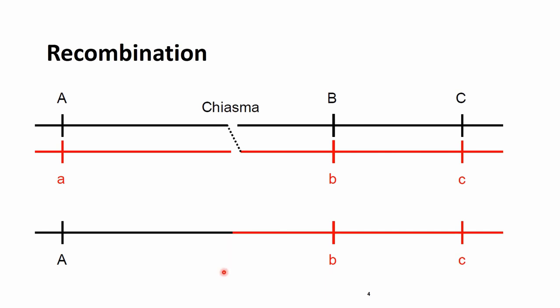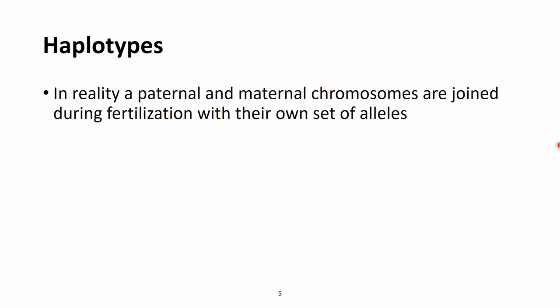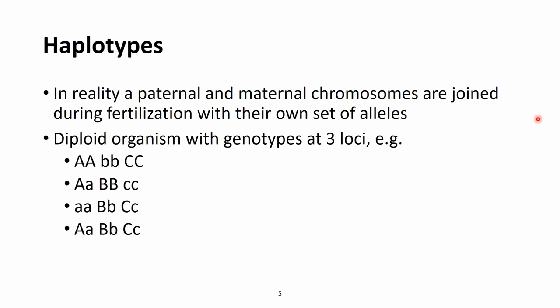During this lecture we will look a bit more closely at these haplotypes and also show how to use them in the context of genotype imputation. So when we look at genotypes, what we see in reality is paternal and maternal chromosomes together that are joined during fertilization to a set of alleles. So what we see are certain genotypes at certain loci.